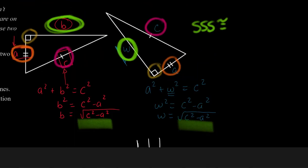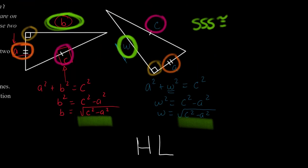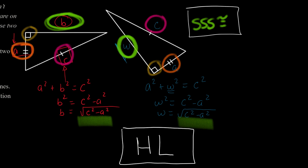If side-side-side is a valid triangle congruence condition — which we're accepting as true — and the Pythagorean theorem is true, then hypotenuse-leg is a valid triangle congruence condition. It looks like we're only using two things here, but remember, the word 'hypotenuse' implies a right triangle. So really it's three things: a right triangle, with a congruent hypotenuse, and a congruent leg.